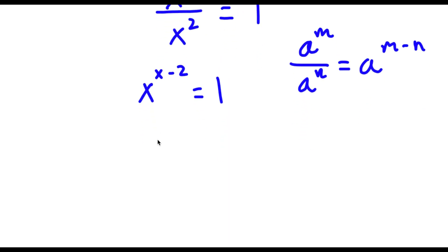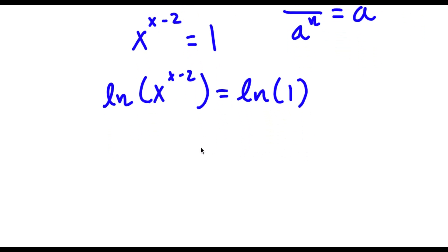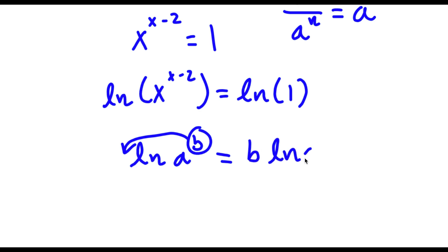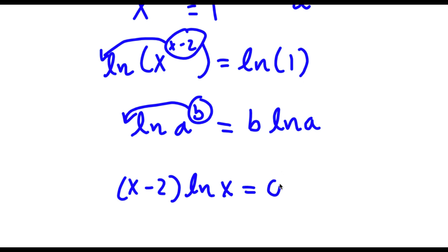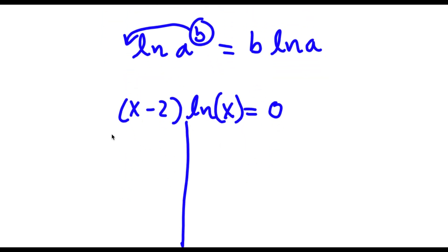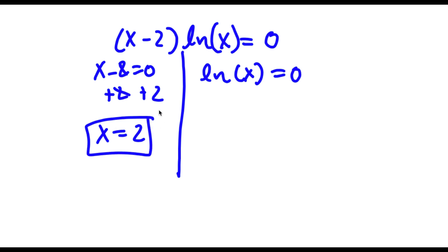Now if I take the natural log on both sides, I get ln of x to the power of x minus 2 equals ln 1. Using the property that ln of a to the power of b equals b times ln a, I can move x minus 2 to the front: x minus 2 times ln x equals ln 1, which equals 0. This gives me two equations: x minus 2 equals 0 and ln x equals 0. From x minus 2 equals 0, I get x equals 2, which is the solution we already found.